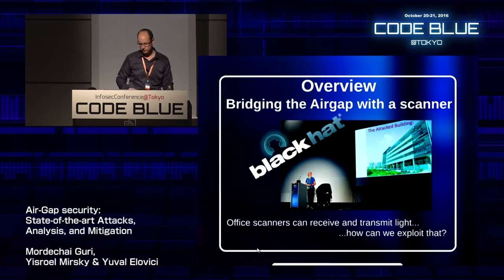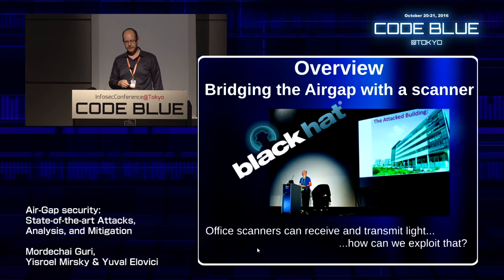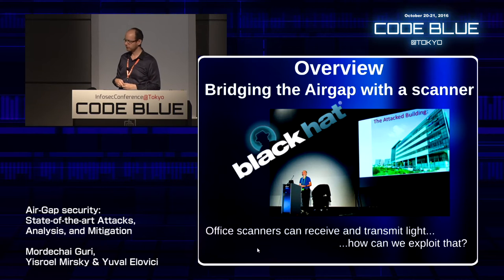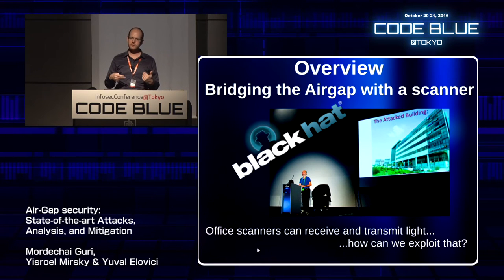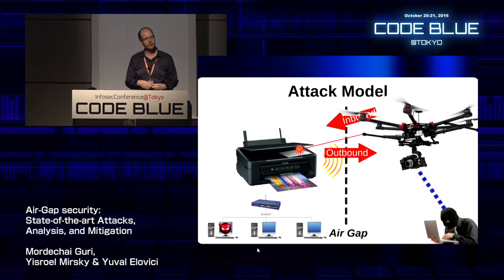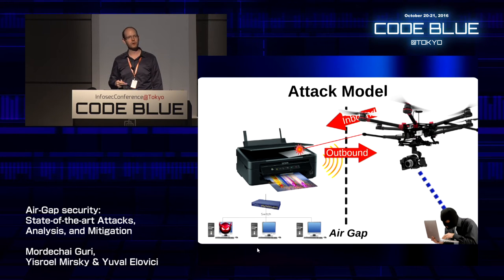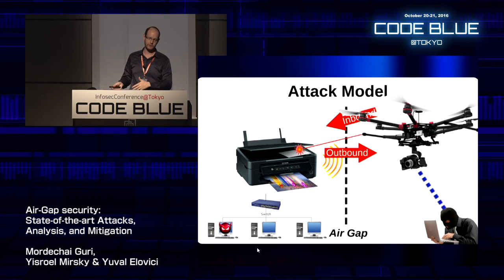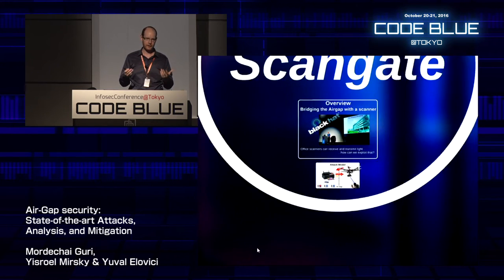The next optical method is ScanGate, proposed by Adi Shamir in collaboration with our labs and presented at Black Hat. Office scanners can light up a room when scanning (if lights are off at night) and can also receive information based on room light level. The idea: malware on the isolated network has the scanner light up the room; a sensitive camera on a drone outside looks through the window and picks up the light as binary. Vice versa, if the attacker wants to send information to the malware, he shines a laser into the room, and the scanning scanner picks up that light.